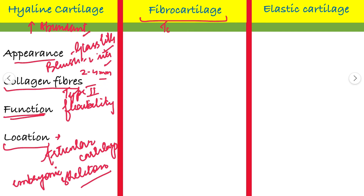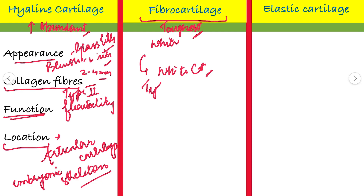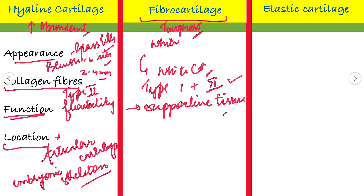Fibrocartilage is the toughest type. It is white in color because white collagen fibers are most abundant in it. Type 1 and type 2 collagen fibers are present within fibrocartilage. It acts as a supportive tissue in our body and is located between the articular structures of the knee joint.